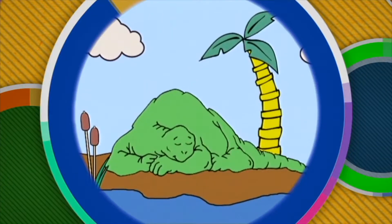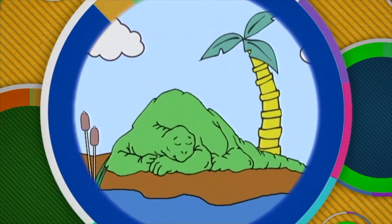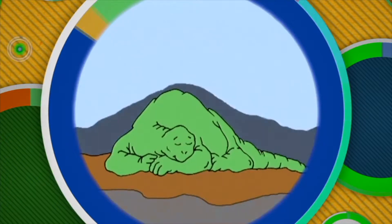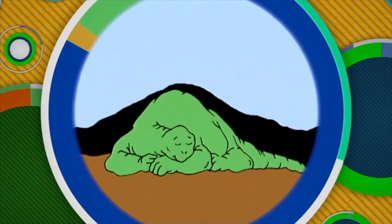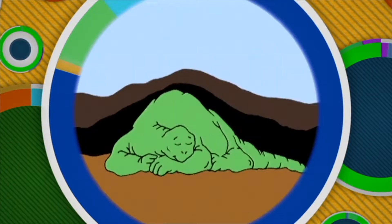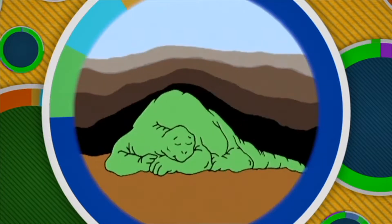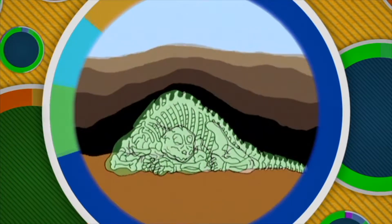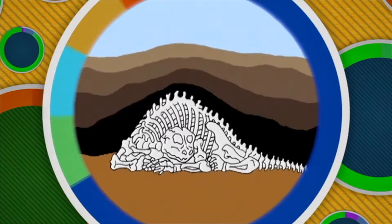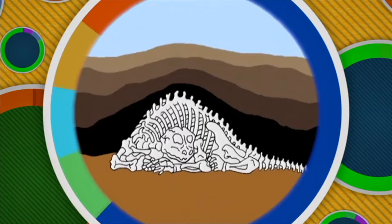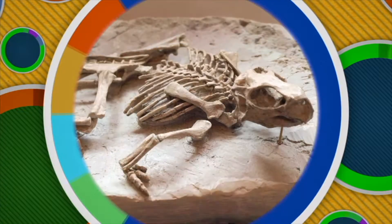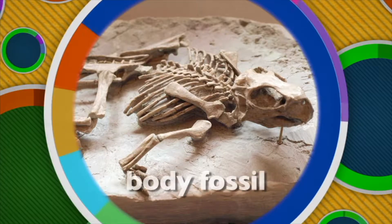Well, let's say a dinosaur died near a pond or lake. Over the years, sand and mud piled up around the dead dinosaur. The soft body parts like skin, brain, and heart decayed. However, minerals from the ground seeped into the bones and teeth, and eventually the hard parts of the dinosaur's body turned to stone too. That's what a body fossil is.